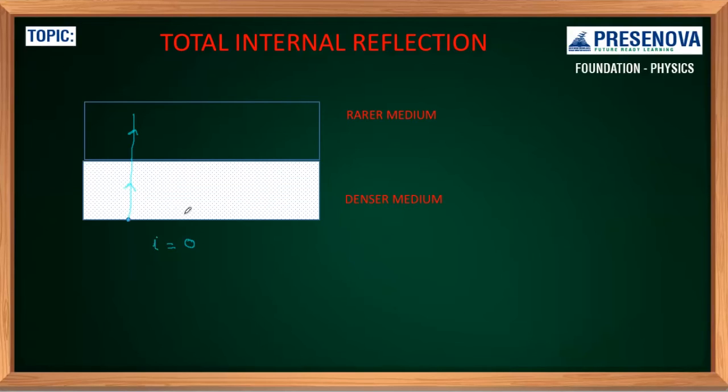Now what if I increase the angle of incidence? Keep in mind the ray is traveling from denser to rarer medium, so it will bend away from normal. And here the angle of refraction is going to be more than the angle of incidence. This is all because the ray is traveling from denser to rarer medium.